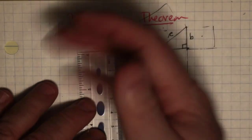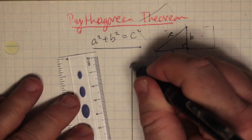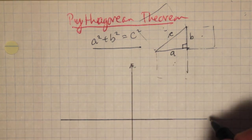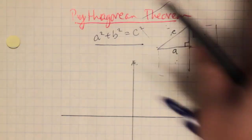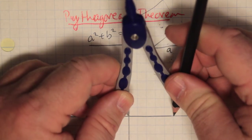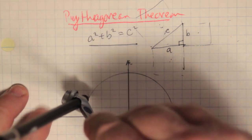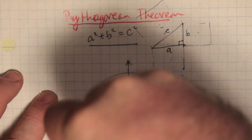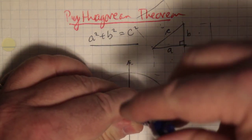Let's take a look at where the unit circle came from. It came from the Cartesian coordinate plane. I'm going to draw it here again — our unit circle.